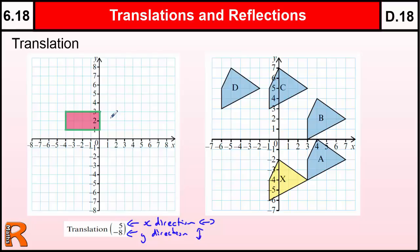And when we have a positive number, that means to go to the right if it's in the x-direction or up if it's in the y-direction, just like the coordinates are on the coordinate axis. And if it's negative, we would go to the left in the x-direction or down in the y-direction.